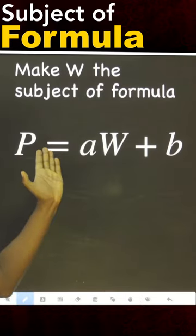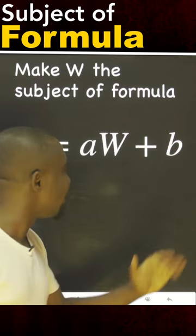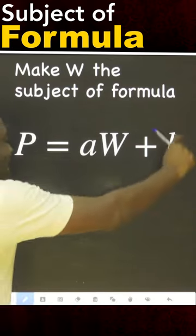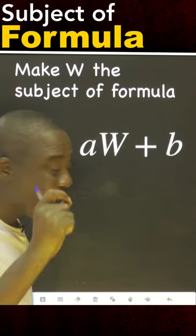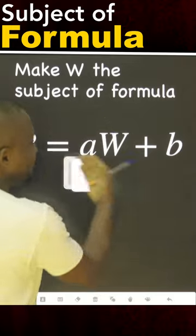Look at this! It says P equals A W plus B. What is it saying now? P has this identity. For you to get P, you need to work this out to get P.